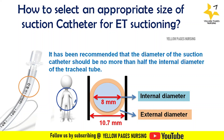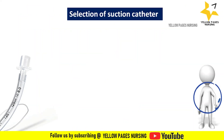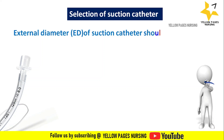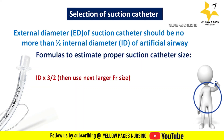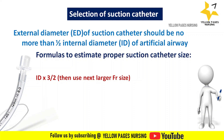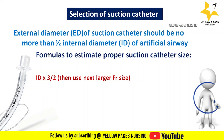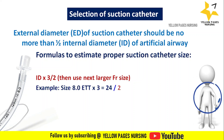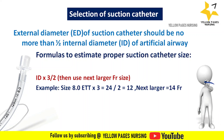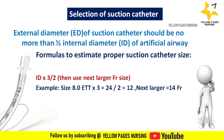Formula 1: internal diameter multiplied by 3, divided by 2, then use the next larger French size. For example, with an internal diameter of 8 mm: 8 × 3 ÷ 2 = 12, so we use the next larger French size — that is, a 14 French suction catheter.